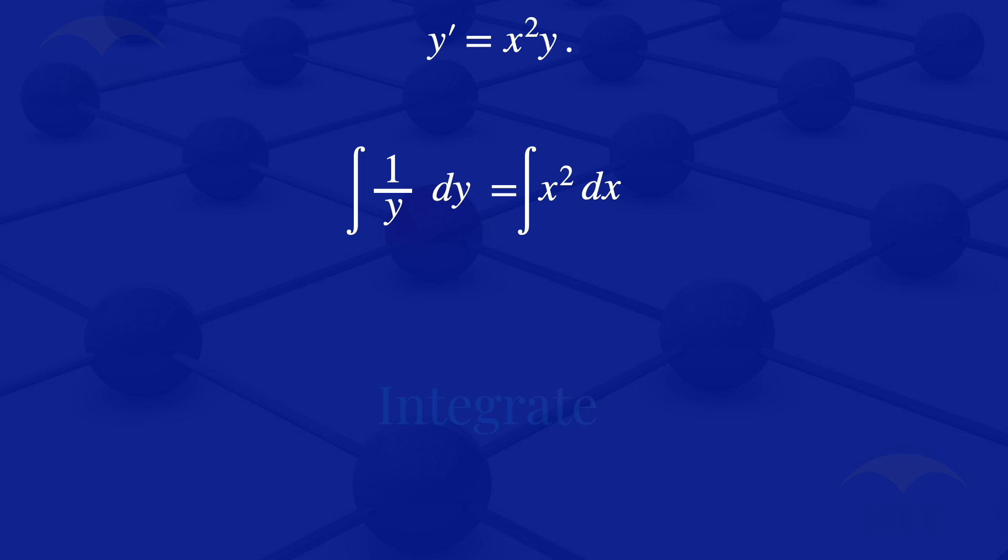When we integrate on the left-hand side there, we'll get ln of the absolute value of Y. On the right-hand side, we'll get X cubed divided by 3 plus the constant of integration. So the result there is ln of the absolute value of Y equals X cubed divided by 3 plus the constant of integration C.